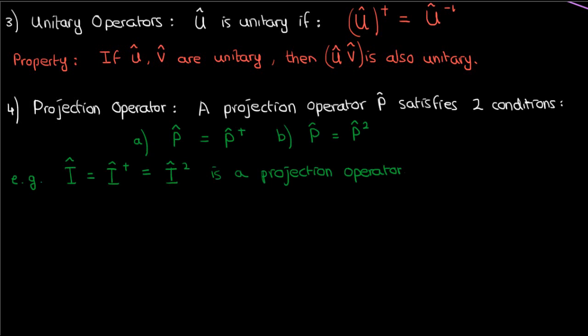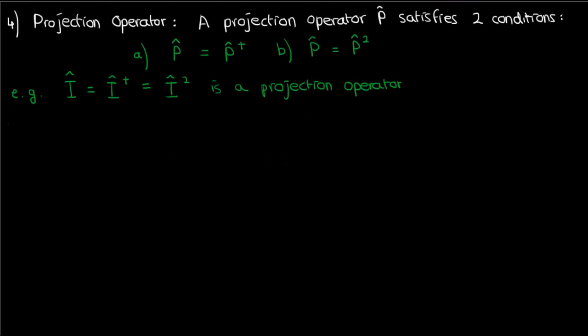A classic example of a projection operator is once again the identity operator. In this case, the identity operator is essentially just projecting your vector onto itself, so you can intuitively see why the identity operator qualifies as a projection operator, even without verifying the fact that it's Hermitian or that it's equal to its own square.